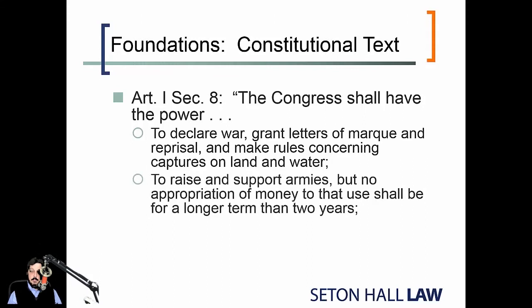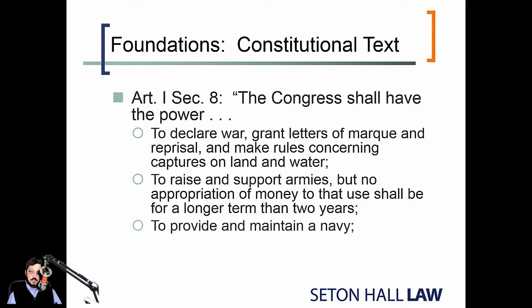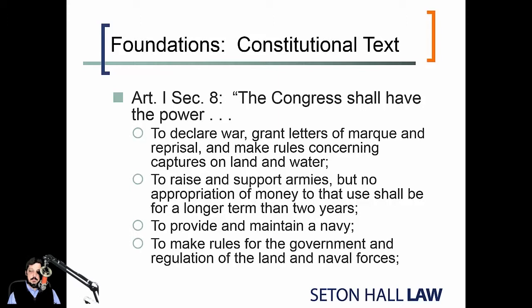Another enumerated power that Congress has is to raise and support armies. Notice that there is a limit on the congressional appropriation that can be used to raise and support an army. Congress also has the power to provide and maintain a navy, and the power to make rules for the government and regulation of the land and naval forces. So the ability to declare war, make appropriations to raise and support a navy and an army, and make rules governing the army and navy falls within the legislative branch.